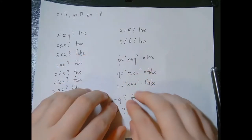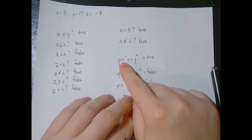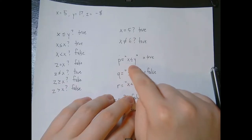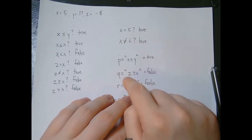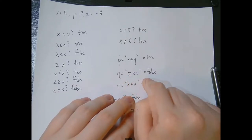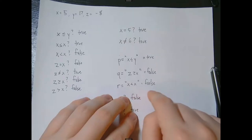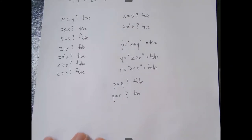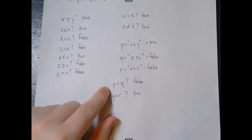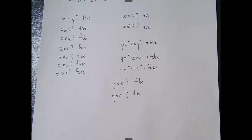We can also work with true and false values directly. If p is equal to the truth value of x is less than or equal to y, then p equals true. If q is equal to the truth value of z is less than or equal to x, then q equals false. And if r equals the truth value of x is less than x, then r is false. We can use equality and inequality to compare p and q. Is p equals q true? Well, p is true and q is false, so they're not the same — p is not equal to q, and since true is not equal to false, this whole thing is false.